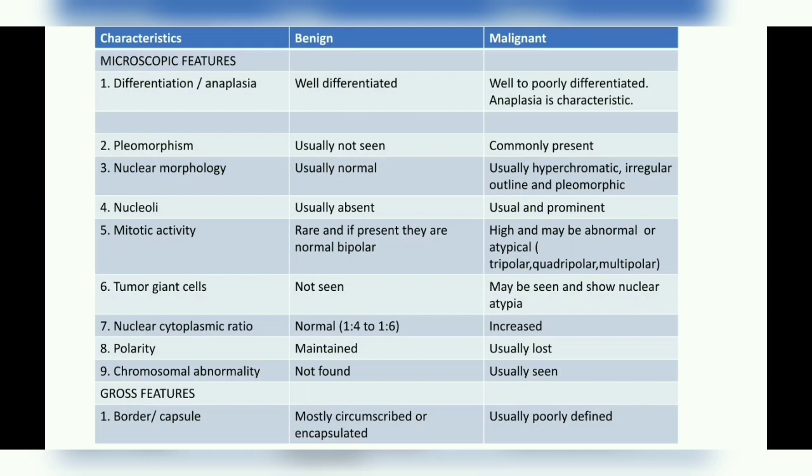Tumor giant cells are not seen in a benign tumor but are seen in a malignant tumor. These tumor giant cells are abnormal, and their nuclei can also show atypical features such as being hyperchromatic.